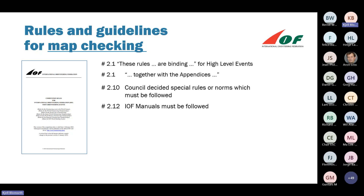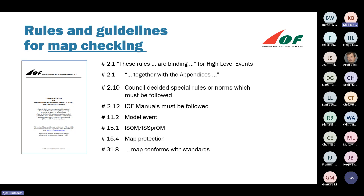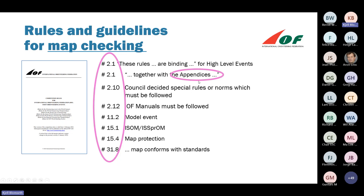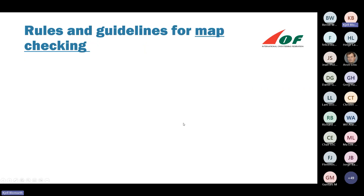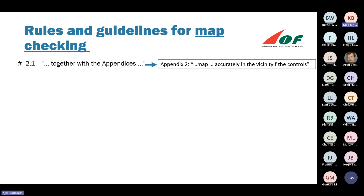In paragraph 2.10, we can see that the council decided special rules must be followed. And in 2.12, IOF manuals must be followed. I could see that there are four more paragraphs where map-related issues are mentioned. I will have a closer look at this on the next slide. These are the paragraphs in the rules which I could find concerning map checking, and we have to go through the appendixes as well. Are there any special rules? And which manuals are valid? In the appendixes, I could only find in Appendix 2 something about maps — that you have to map accurately in the vicinity of the controls.